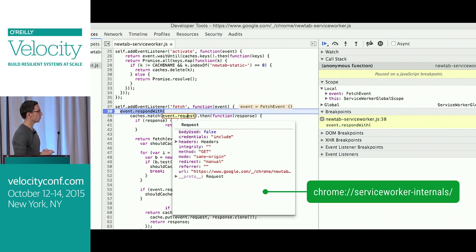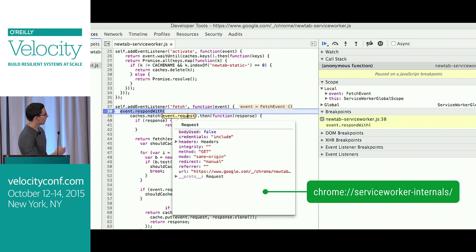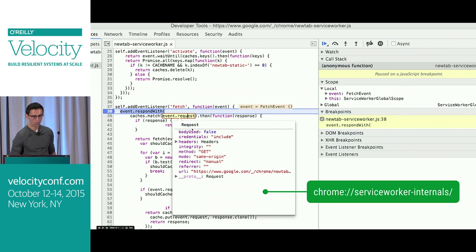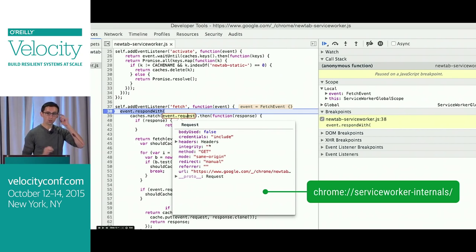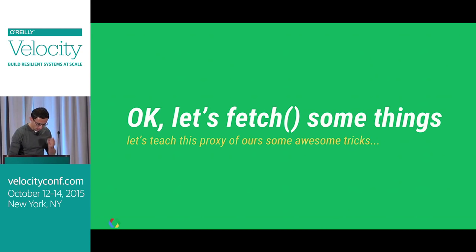For me the real aha moment came when I was able to set a breakpoint in my Service Worker and effectively breakpoint the browser when it makes a request — not in my code, but in my Service Worker. Chrome's new tab page actually uses Service Worker under the hood. If you go to service-worker-internals, you can inspect it and set a breakpoint in fetch. As you can see, inspecting event.request gives you the method, the type, the security mode, the URL, and you can iterate over the headers. It has all the metadata about the request — it's as if you have a proxy that just received the request, except it's living on the client within the browser.